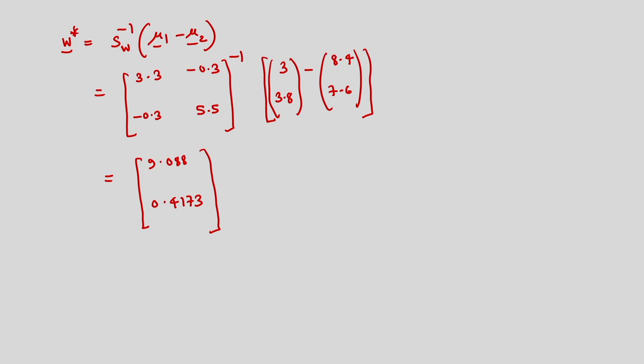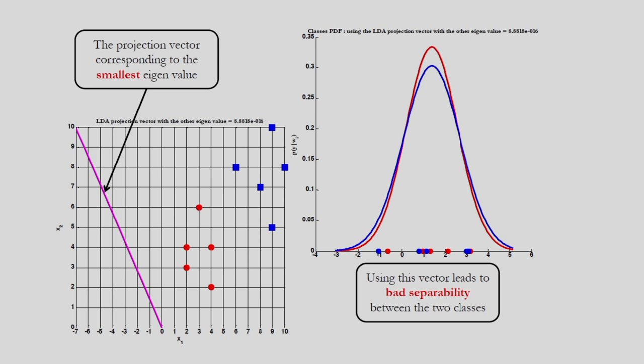This can be shown pictorially. Corresponding to the smallest eigenvalue I am showing the pink line as the direction of projection. You can see the projection vector corresponding to the smallest eigenvalue — in this case the two classes' samples will be overlapping if I consider that pink direction of projection. You can see from the right figure that if I consider the class conditional densities, they are overlapping — that means it corresponds to bad separability.